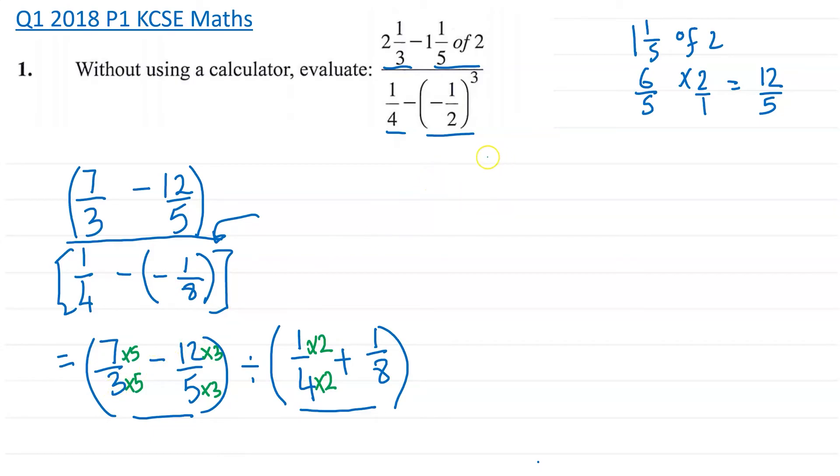So if we carry on, on this side: 7 times 5 is 35 over 3 times 5 is 15. We're going to take away 12 times 3, which is 36, and then over 15. This whole thing we're going to divide with 1 times 2 is 2 over 8, and then we have plus 1 over 8.